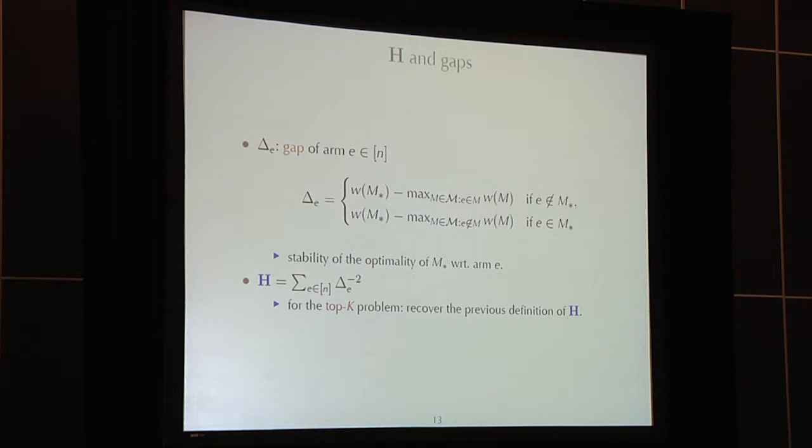What is the hardness H? H is depending on the gap of each arm. For each arm E, we define the gap depending on whether E is in the optimal set m star or not. If E is not in the optimal set, the gap would be the weight of the optimal set minus the weight of the best possible arm if you force E to be selected in the set. Symmetrically, if E is in the optimal set m star, the gap would be the difference between the weight of the optimal set minus the best possible weight if you force E not to be in the set selected. That's the gap. The hardness, then, is the summation among all the edges, arms, and the quantity is 1 over delta E squared.